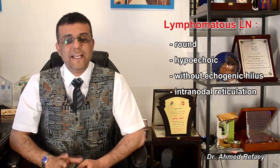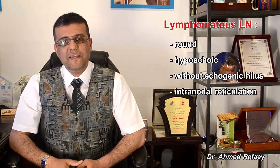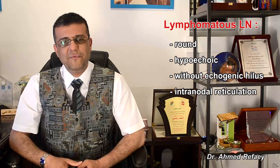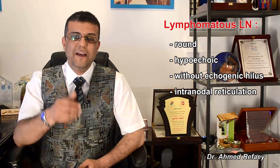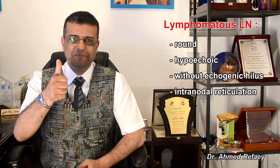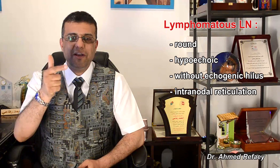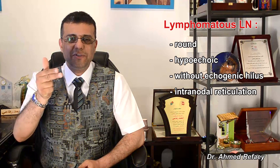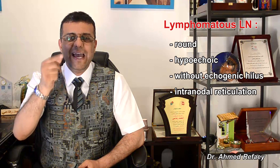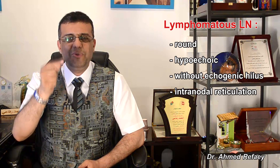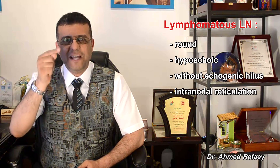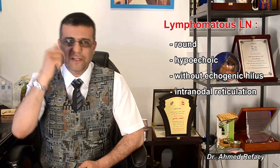Regarding the lymphomatous lymph node: on gray scale sonography, lymphomatous lymph nodes tend to be rounded — not oval — hypoechoic, without echogenic hilum, and tend to show intra-nodal reticulation, as you see in these images.